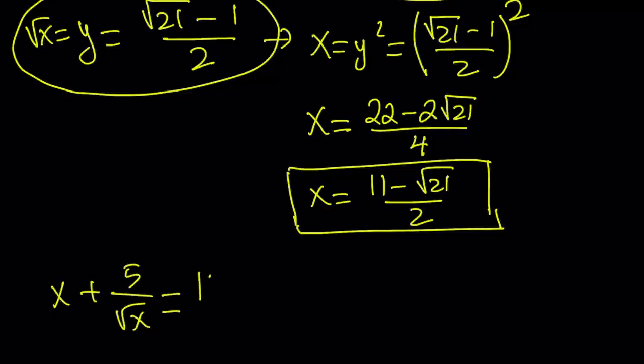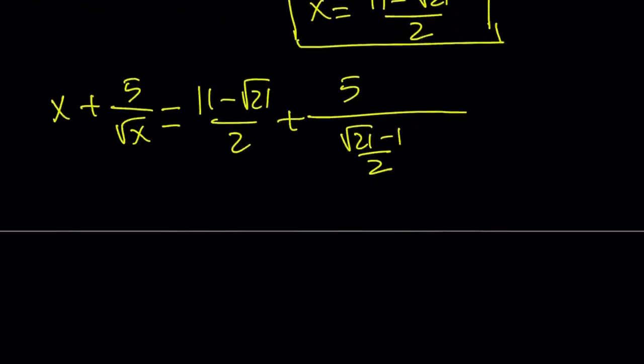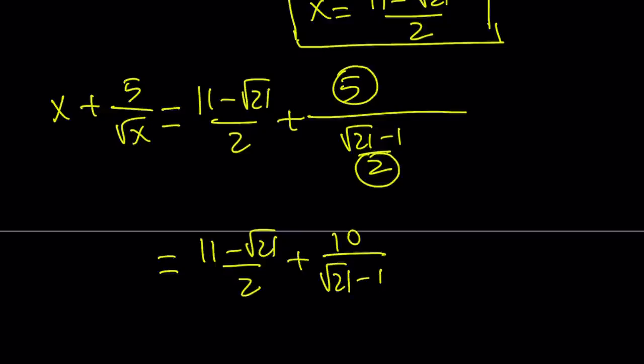So I'm going to replace x with 11 minus root 21 over 2, and the square root of x with square root of 21 minus 1 divided by 2. We're going to flip-flop and then multiply these. And that's going to give us 11 minus root 21 over 2. 2 is going to be multiplied by 5, and that's going to give me 10 divided by square root of 21 minus 1.